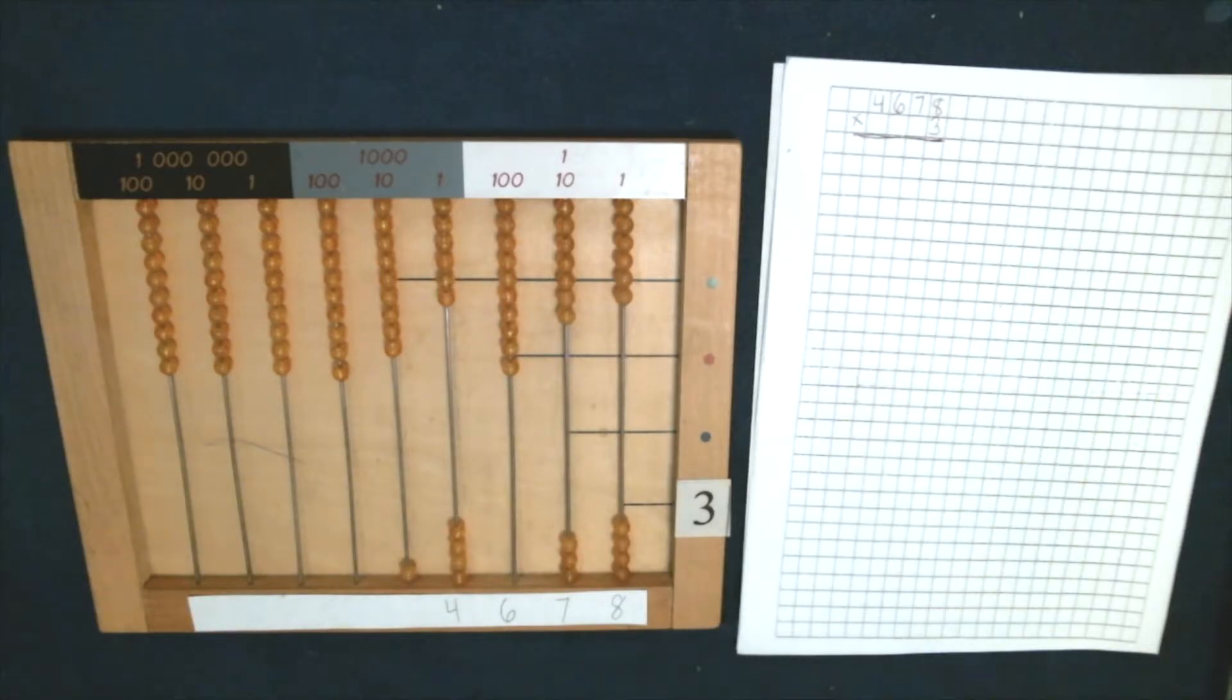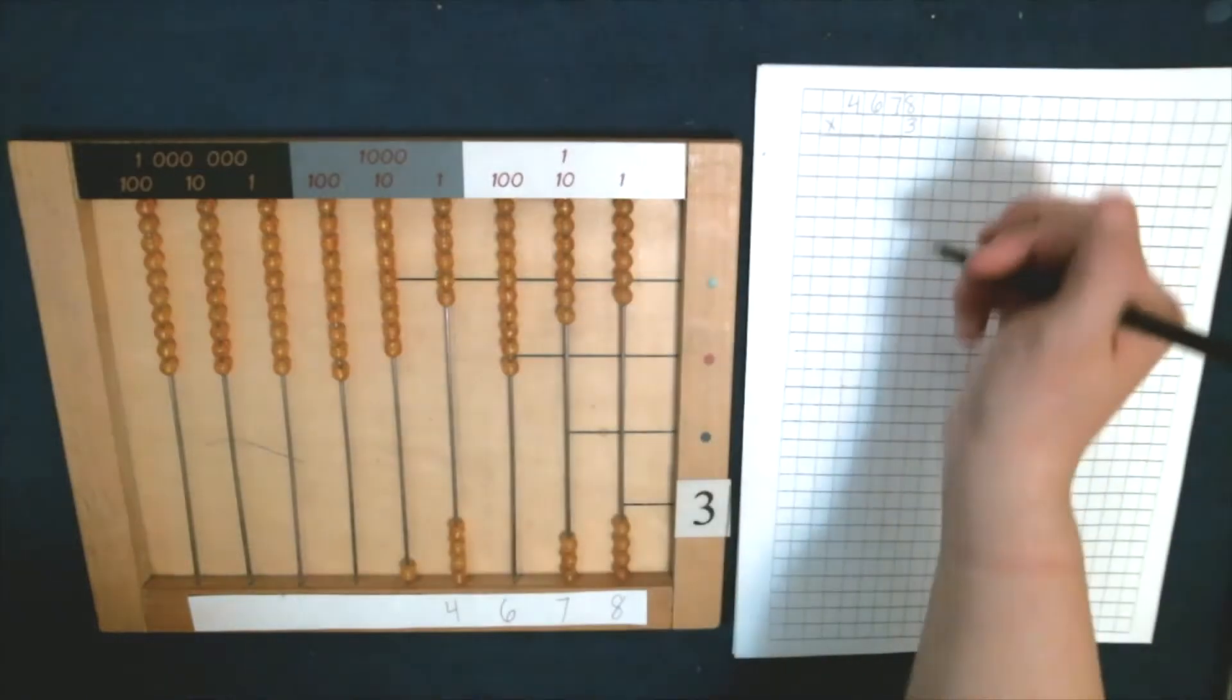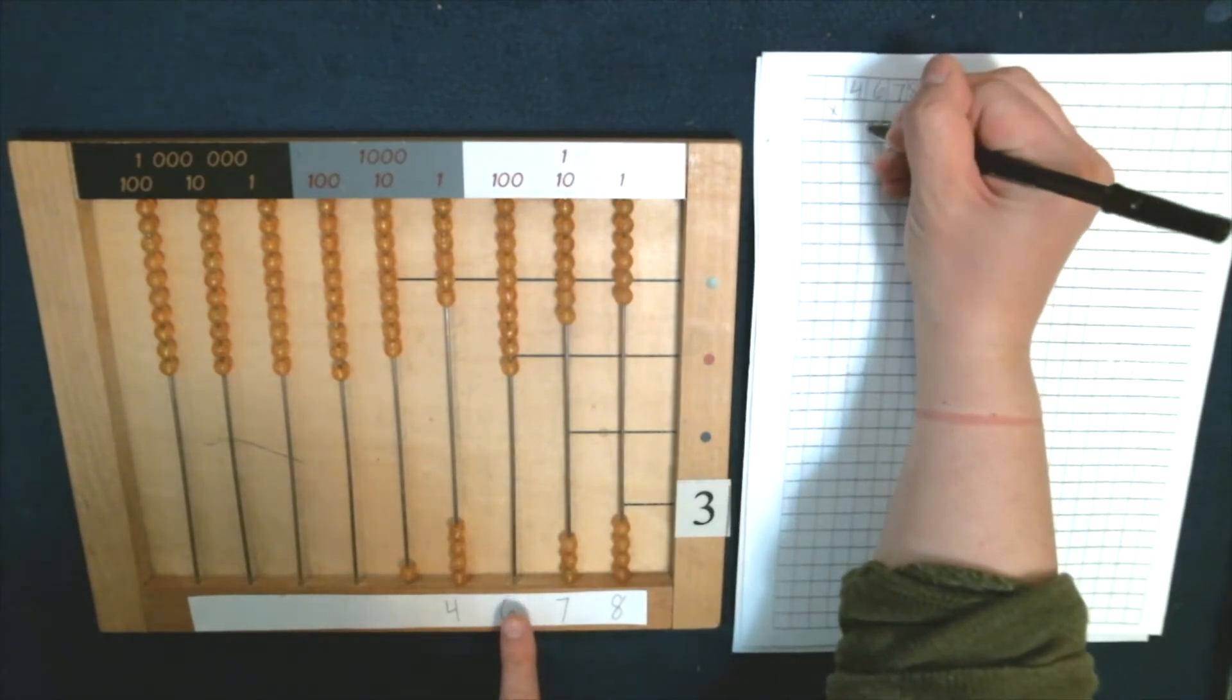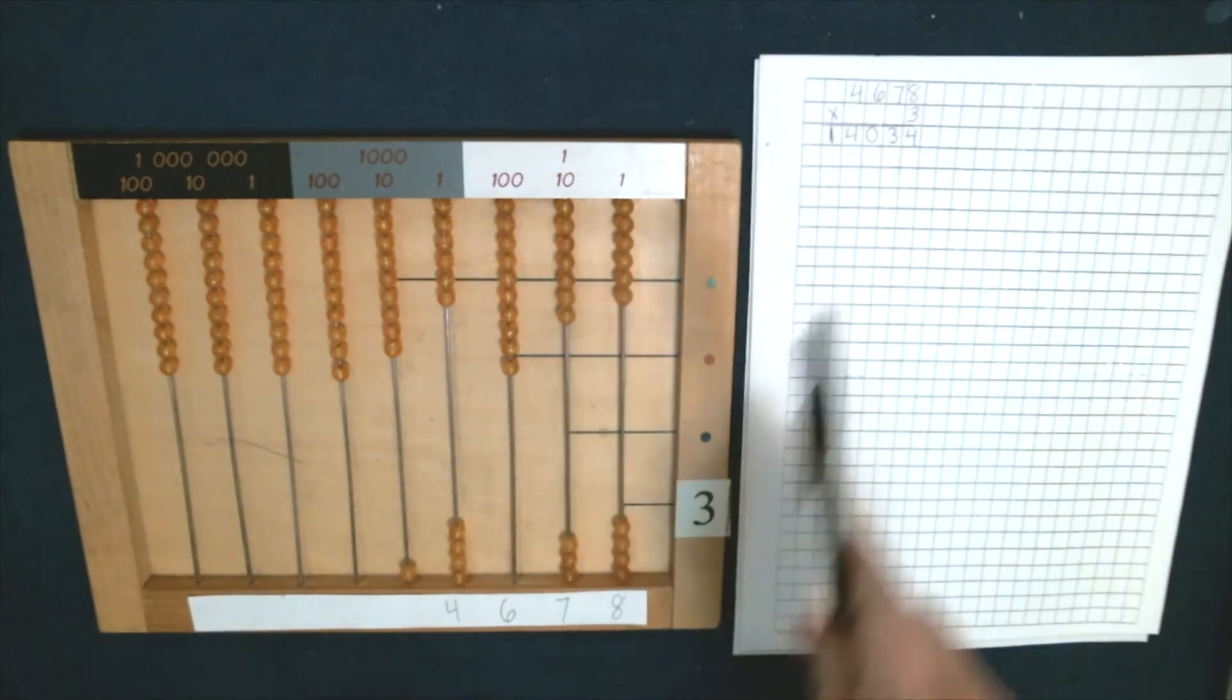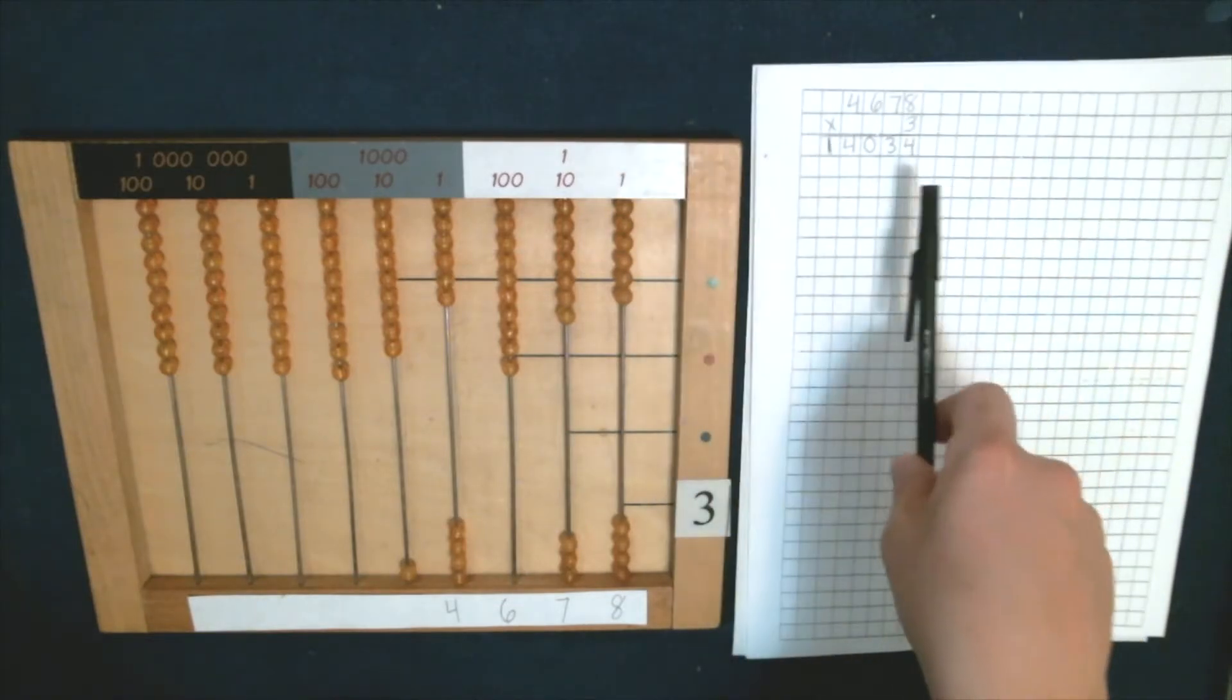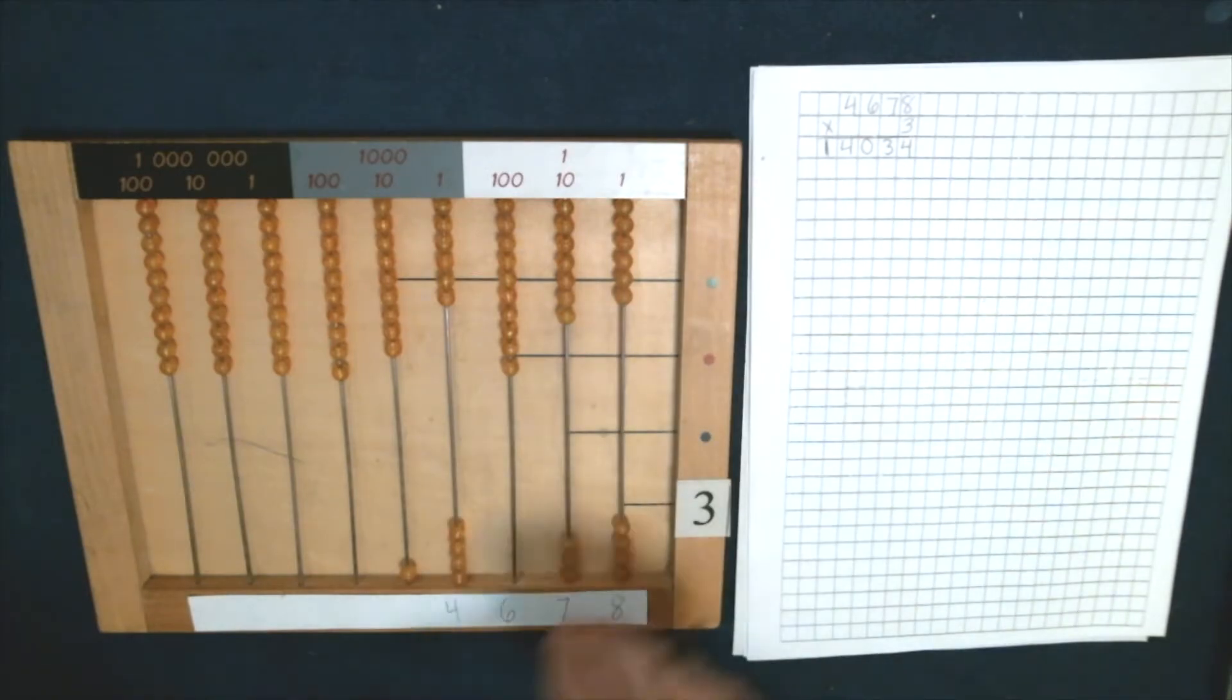So we have one, two, three, four units, three tens. How many hundreds? Zero. Four thousands, one ten thousand. Just because there's nothing written here doesn't mean that you don't have to write this. You need to include every single number on every single wire. So this says 14,034. Let's do another one.